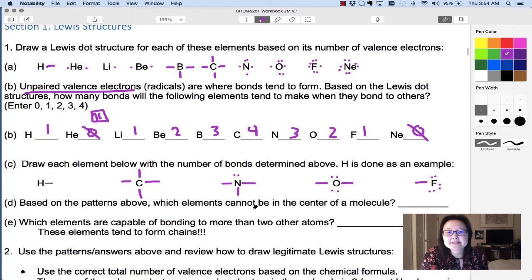Based on these patterns, the elements that are not in the center of a molecule, meaning it doesn't have things attached around it, are hydrogen and fluorine. They only have 1 bond, so they tend to be on the outside of a molecule.